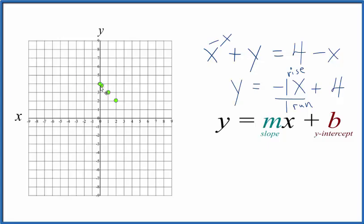You could also go the opposite direction - up 1 and then left 1. You can see all these points are on our line.